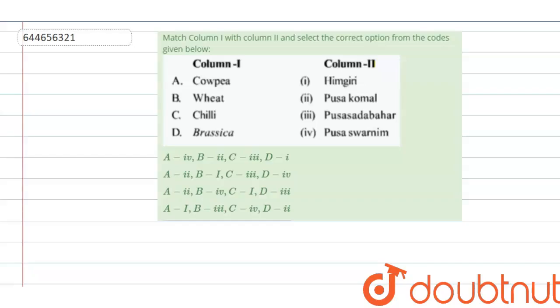Match column 1 with column 2 and select the correct option from the codes given below. The terms in column 1 are cowpea, wheat, chili, and brassica. The terms in column 2 are Himgiri, Pusakomal, Pusasadabahar, and Pusaswarnim. Let us solve this.